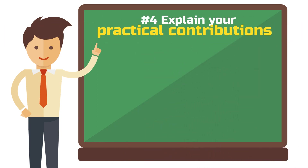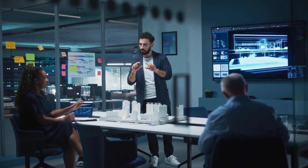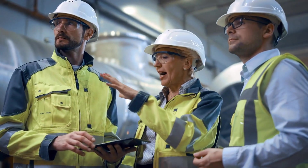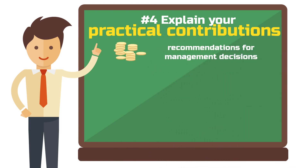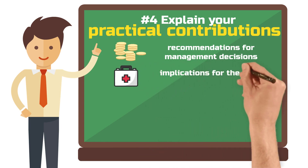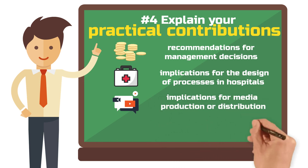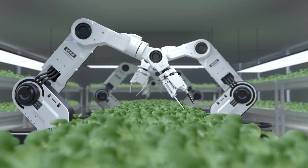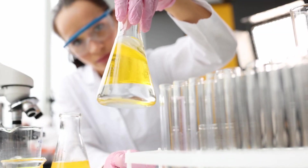Component number four: explain your practical contributions. Studies that have relevance to industry can optionally include a section or subsection that highlights practical implications — what the results actually mean for the world out there. In economics, practical implications could be recommendations for management. In the healthcare sector, it could lead to implications for the design of processes in hospitals. Communication scholars could consider implications for media production or distribution. Mechanical engineers could explore application scenarios for industrial projects. Most disciplines can establish a connection to practical applications. However, every field has its own standards, so review a handful of papers from your discipline and model the structure you find there.